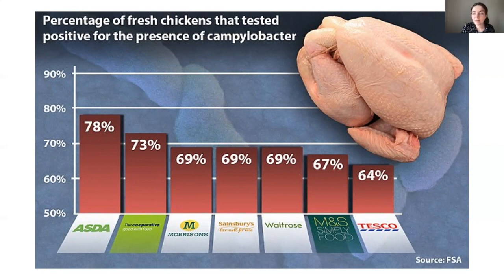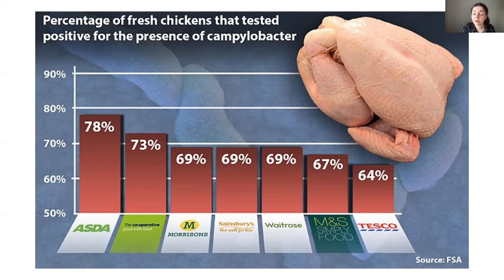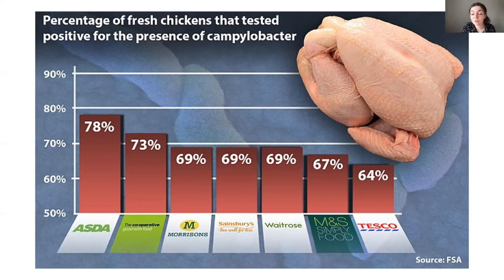In the same FSA study, they found that on the packaging surface, levels of Campylobacter were as high as 12 percent in some supermarkets, highlighting that simply touching the outside packaging can actually result in cross-contamination and also infection.